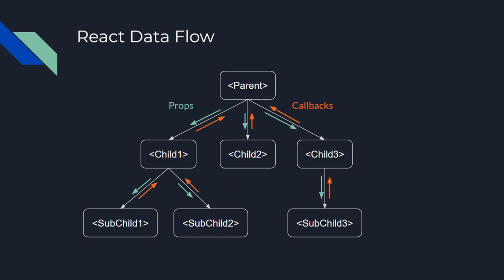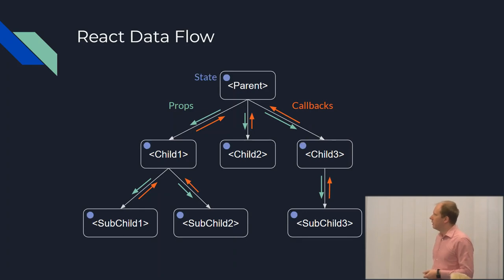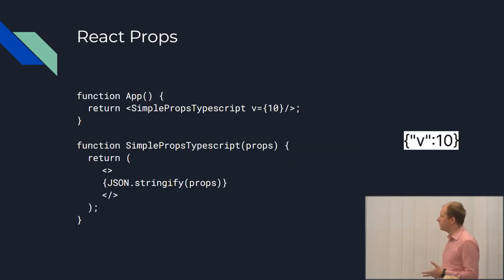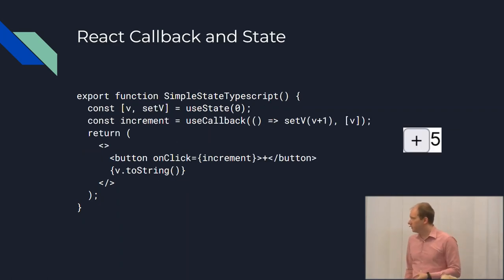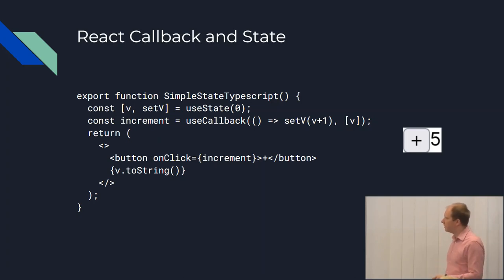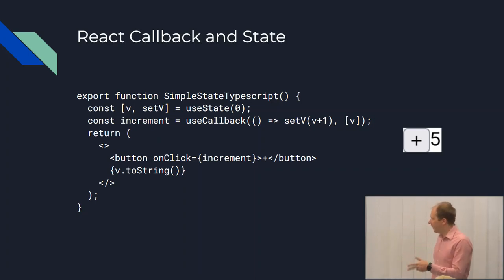Data flows back up the tree through the use of callbacks. You might provide a callback function as part of your props when you invoke a smaller child component, and when you do so it can call you back and give you new data. Every element can also contain state, and React manages this state. Here's an example of a very simple component that takes its props, renders them as JSON, and puts them on the screen. Another simple component draws a button, has a state variable, and every time the button gets clicked, a function called increment gets called and updates the state variable V, triggering a re-render.